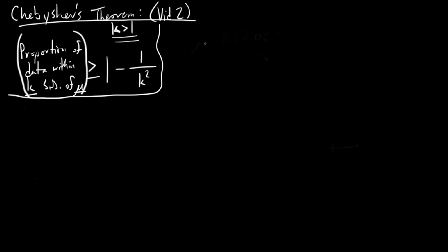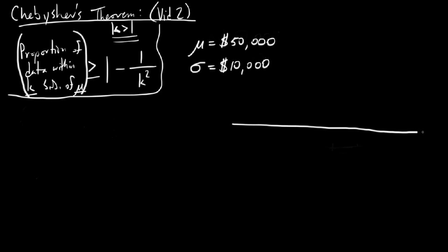Let's look at a scenario involving home values. Imagine there's a neighborhood where the average home value is $50,000 — so $50,000 is the average cost of a home in the neighborhood with a standard deviation of $10,000. It would be valuable to sketch a diagram of what we're considering here. We'll let the axis represent the amount of the home in dollars, in thousands, to save ourselves from writing all those zeros.